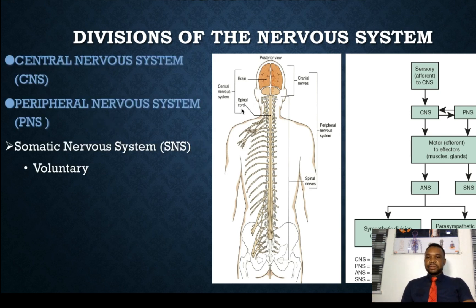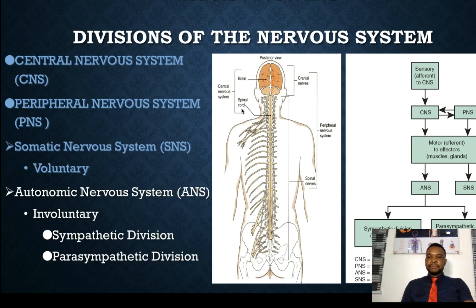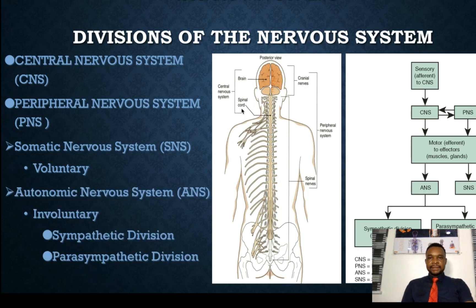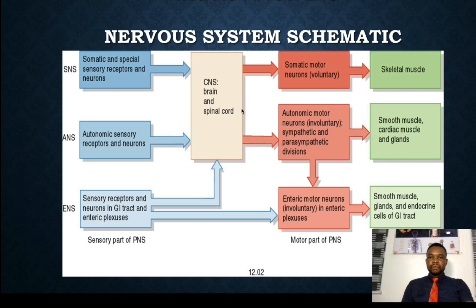So those are the components of the nervous system: the central nervous system and the peripheral nervous system. The peripheral nervous system is further divided into the somatic nervous system, which is voluntary — we can control that aspect of the innervations, like the skeletal muscles; you decide to move your limbs or your head. Then we have the autonomic nervous system, which is involuntary, divided into the sympathetic and the parasympathetic division.